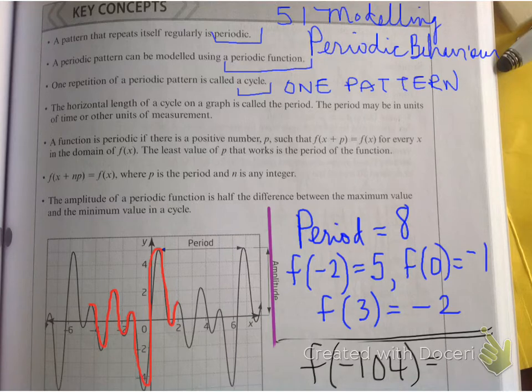Hopefully, you figured out that the answer is going to be negative one. f at zero subtracted from negative 104 is a multiple of eight.